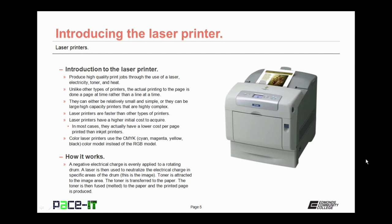Laser printers can be relatively small and simple or they can be large high capacity printers that are highly complex. They can duplex, they can collate, they can organize, or they can just be a simple printer. Laser printers are faster than other types of printers. Part of that is the fact that they print a whole page at a time instead of line by line.